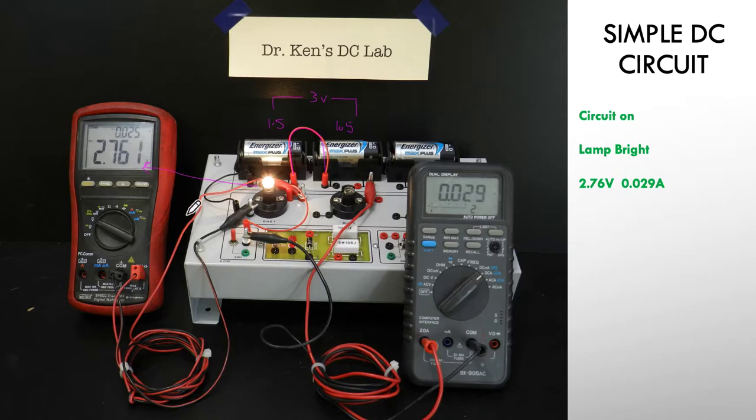this voltage across the lamp is at 2.761 volts. It's reasonably close to 3. And my current has gone up to 0.29 or 29 milliamps. And you can see between the two slides a significant increase in brightness of our lamp.